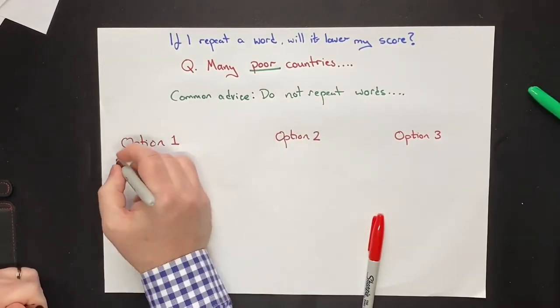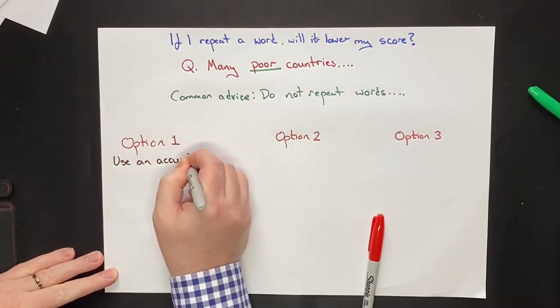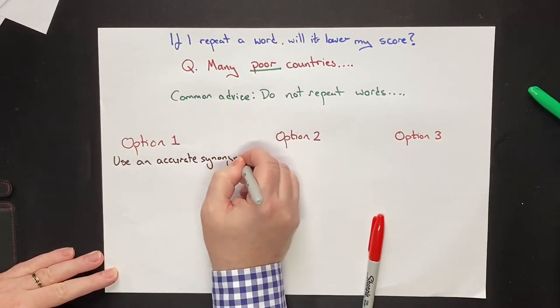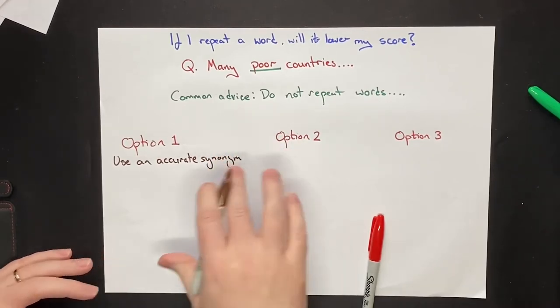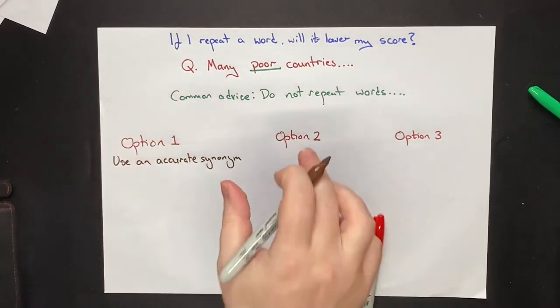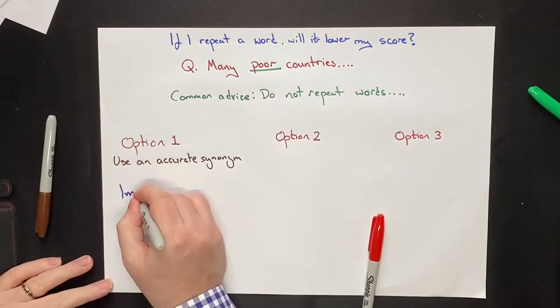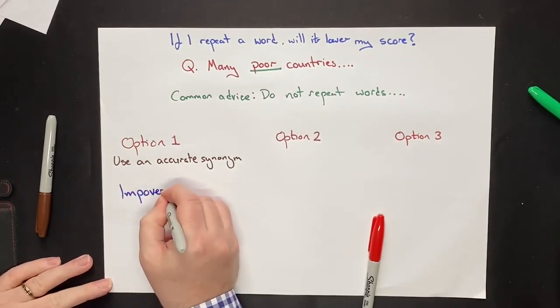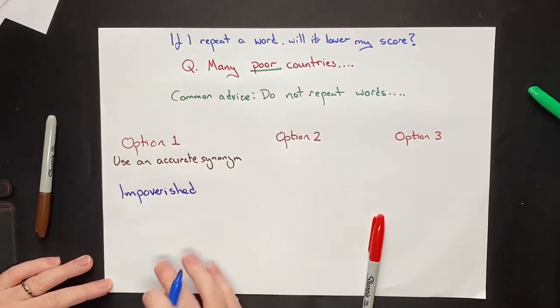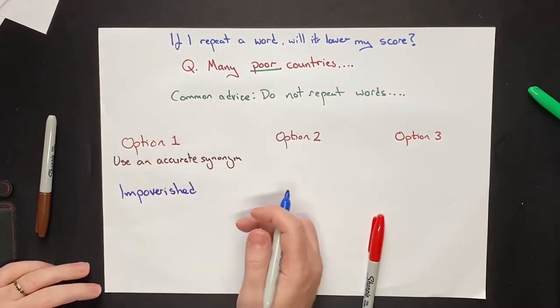The first option is use an accurate synonym. Synonyms are words that are different but they mean the same, like female and woman, for example. So we could put impoverished. Many impoverished countries means the same thing as many poor countries. So that's our first option.